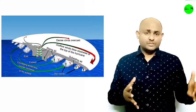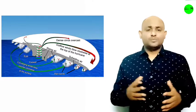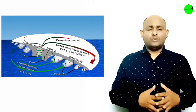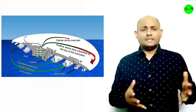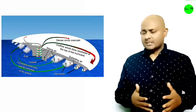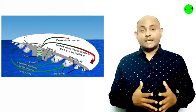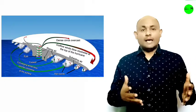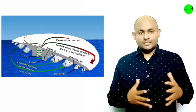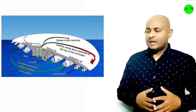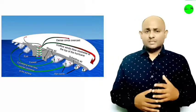The favorable conditions for tropical cyclone formation include: first, large sea surface temperature higher than 27 degrees centigrade; second, presence of the Coriolis force; third, small variation in vertical wind speed; fourth, a pre-existing weak low pressure area or low-level cyclonic circulation; and fifth, upper divergence above the sea level system.